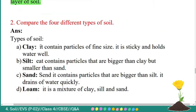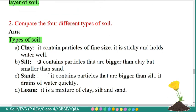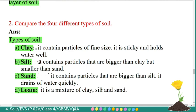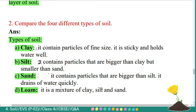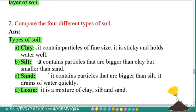Second question: compare the four different types of soil. Types of soil: clay, silt, sand, and loam. First, clay — it contains particles of fine size; it is sticky and holds water well. Second, silt — it contains particles that are bigger than clay but smaller than sand; it drains off water quickly. Fourth type, loam — it is a mixture of clay, silt, and sand.